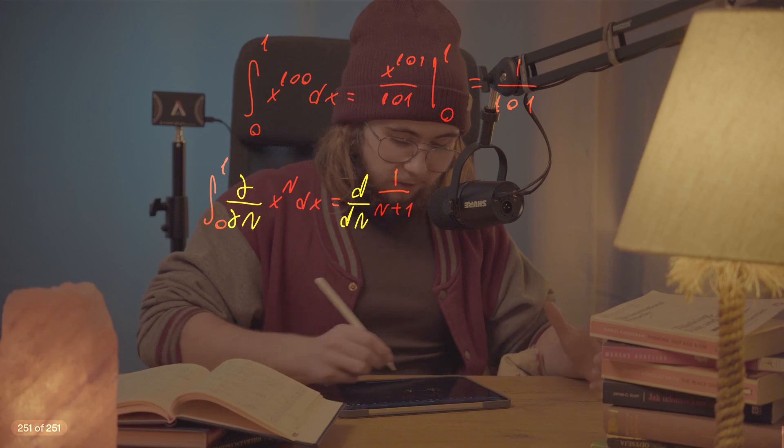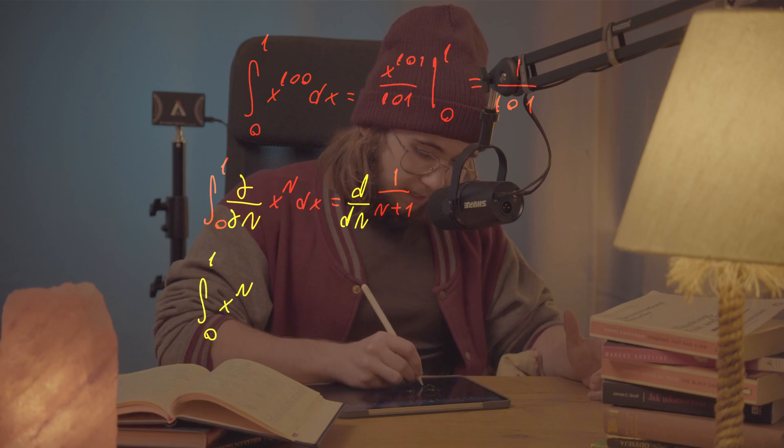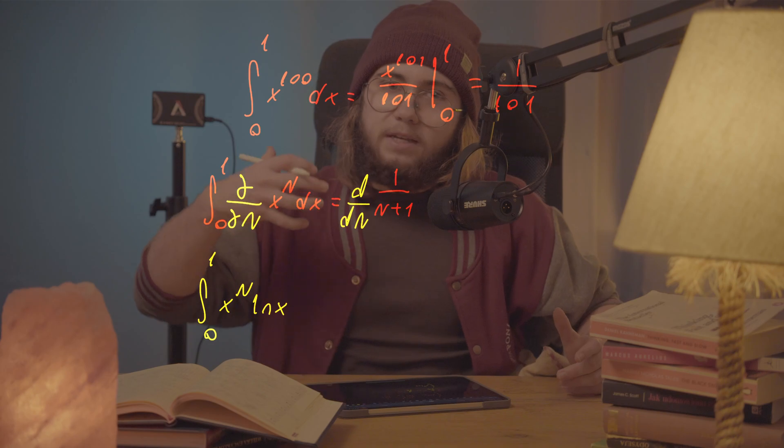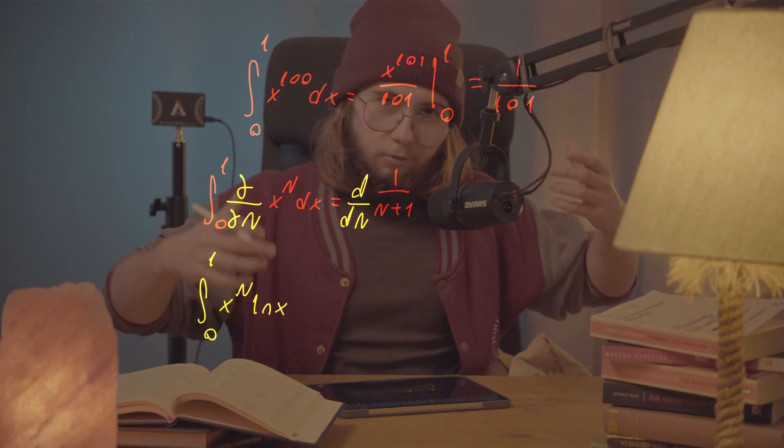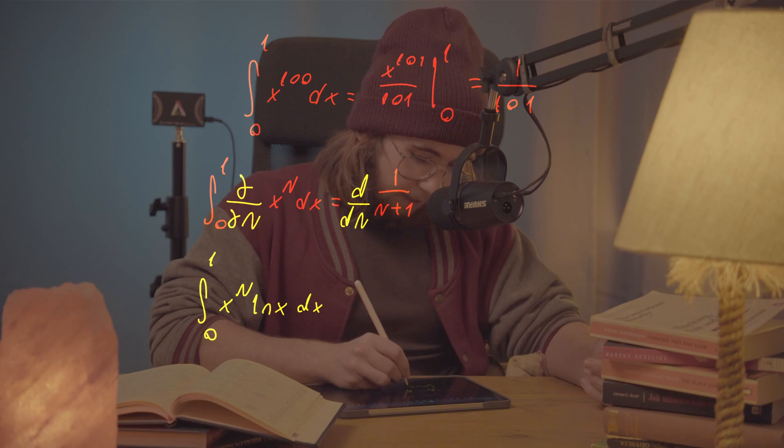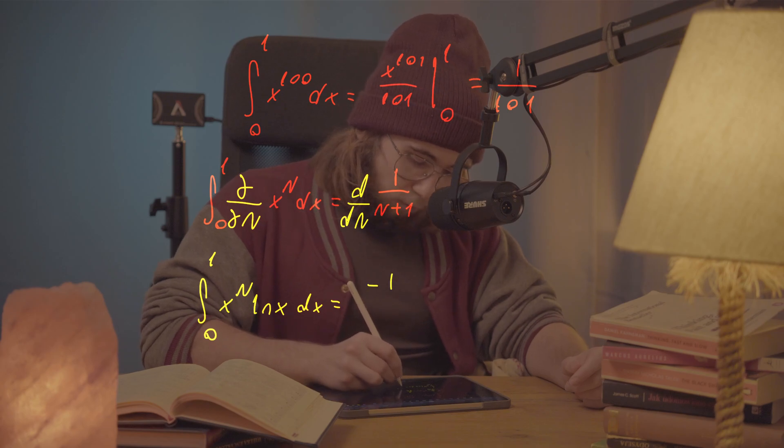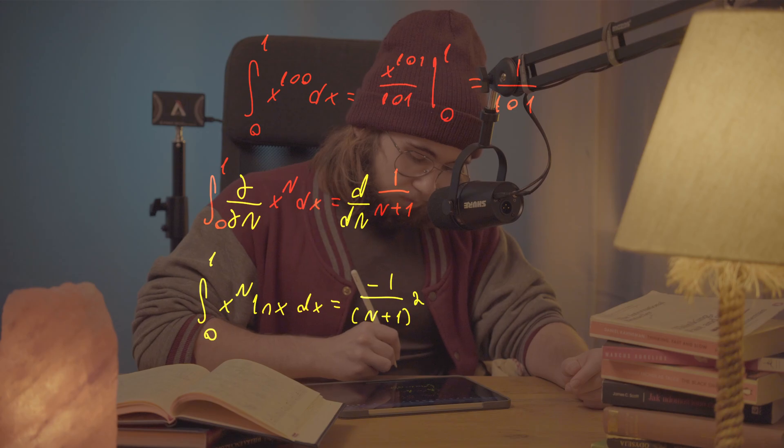So what I'm going to be left with on the left-hand side is this integral between 0 and 1 of x to the power of capital N times the natural log of x, because x is just a constant and we know that rule for derivatives. And on the right-hand side, what we get is just negative 1 divided by (n+1) squared.